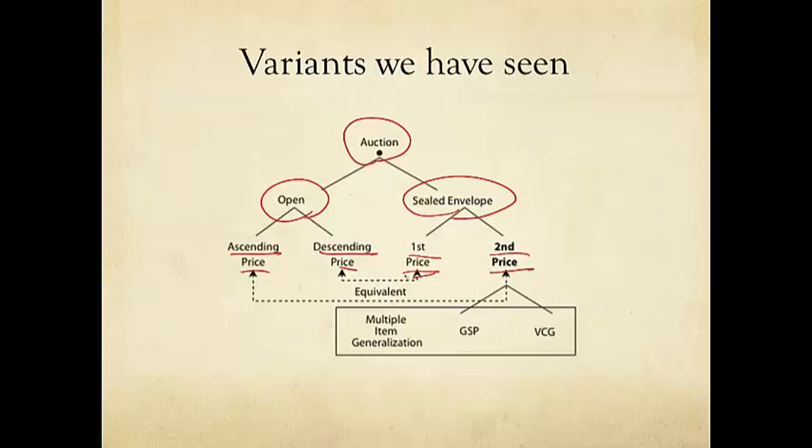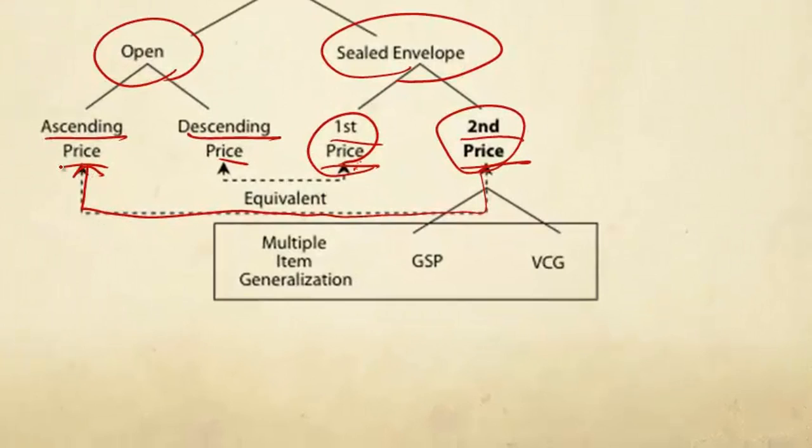We saw that first price sounds intuitive, but actually it's not. And in fact, GoTo or Overture tried first price generalized for multi-item auction in the 90s and quickly realized it is quite unstable. Now, the second price may sound counterintuitive because you're decoupling the allocation decision with the pricing decision. But it turns out it is effectively equivalent to a simpler version of ascending price auction, whereas first price is actually effectively equivalent to descending price open auction.